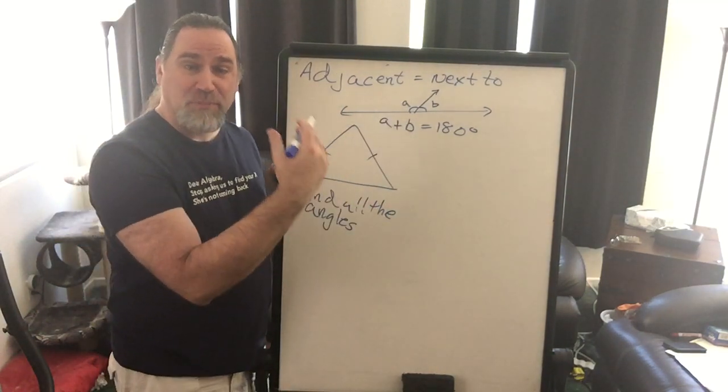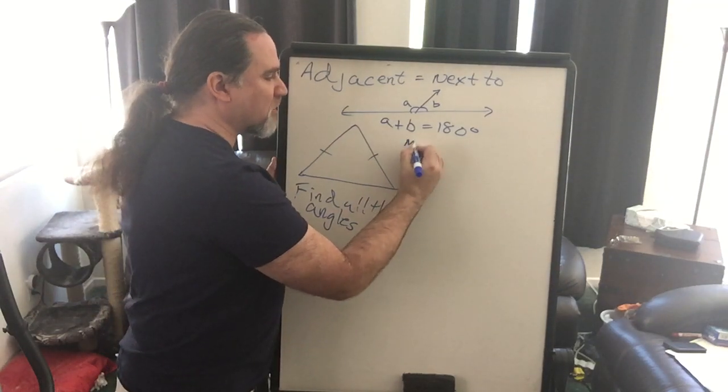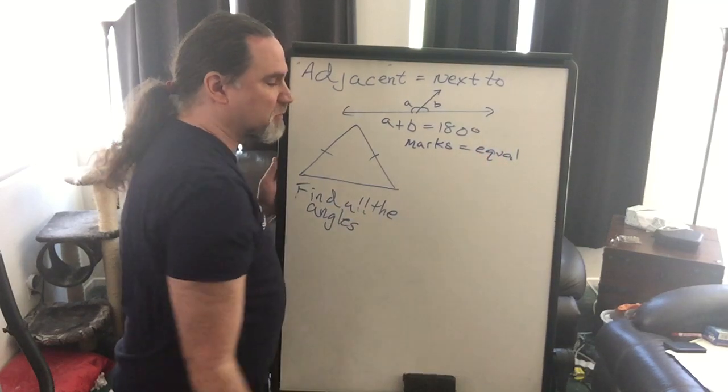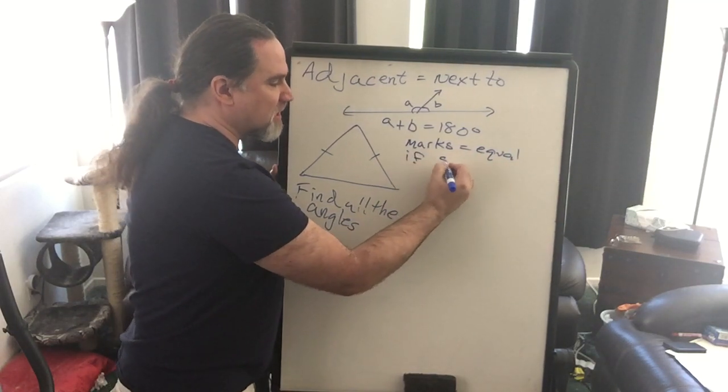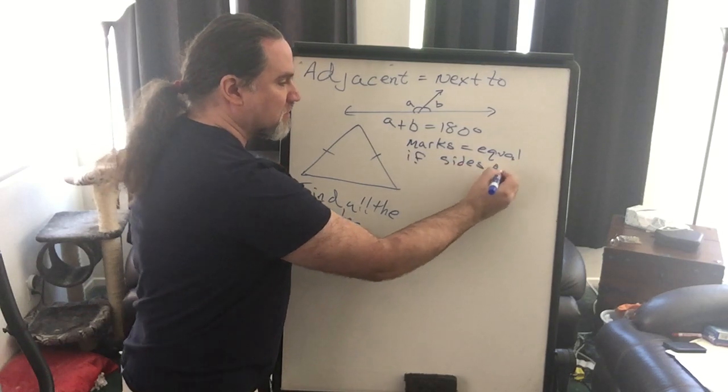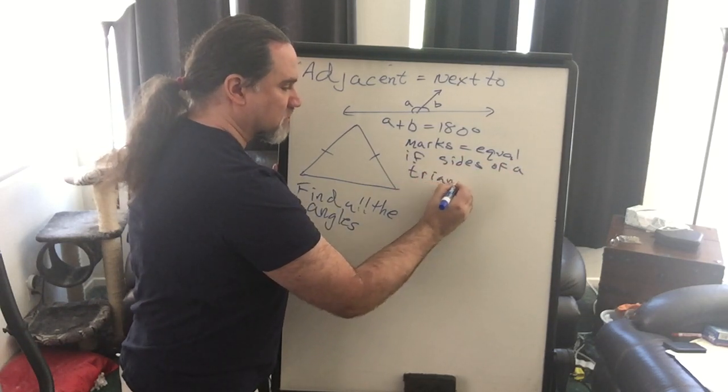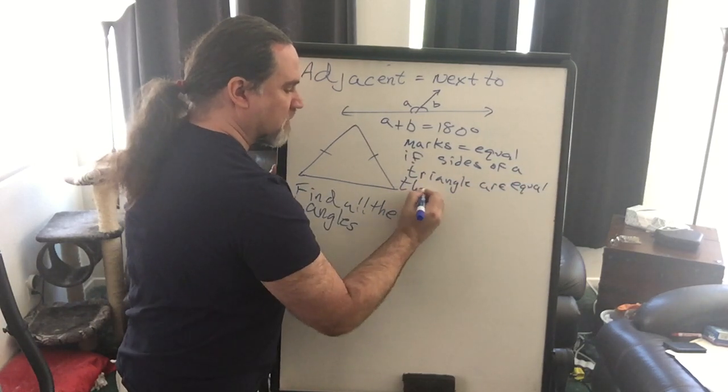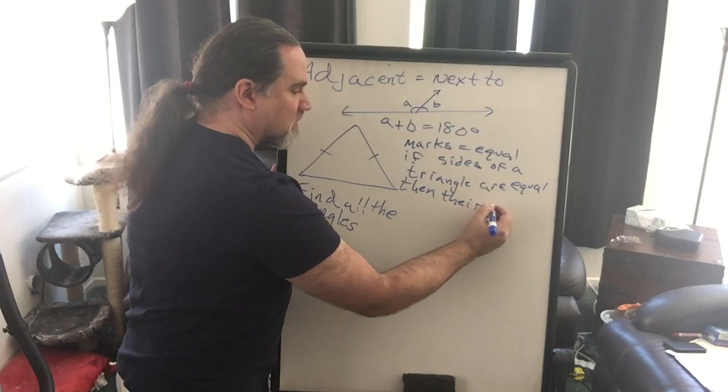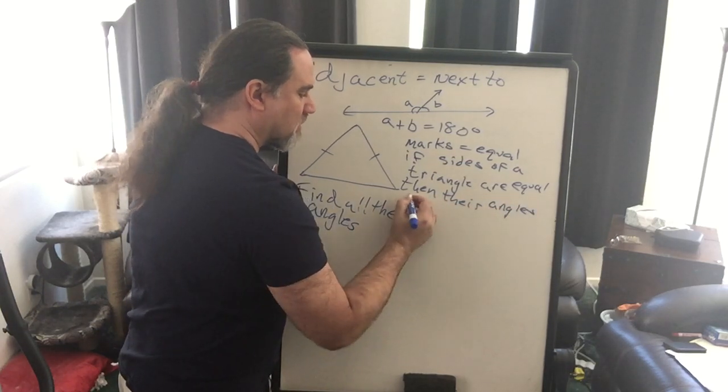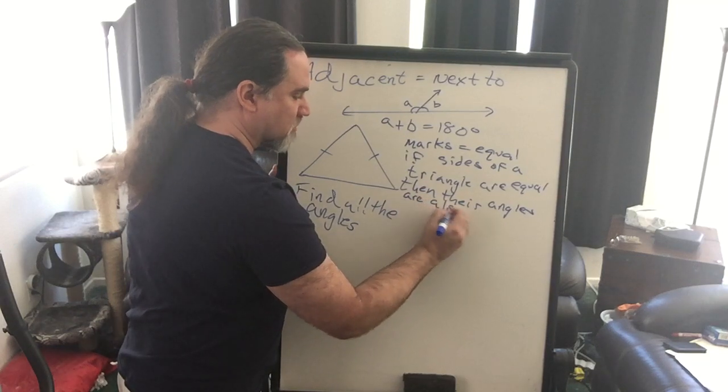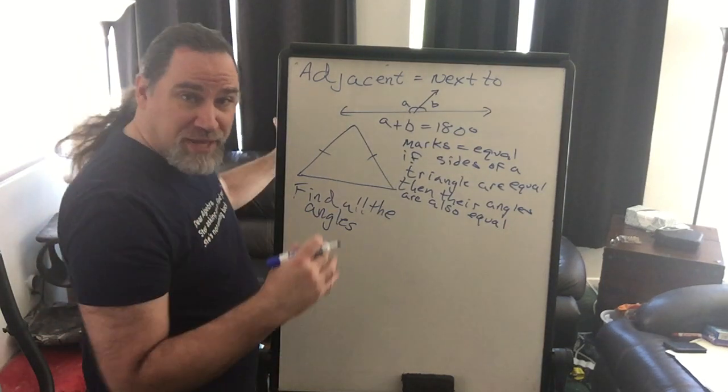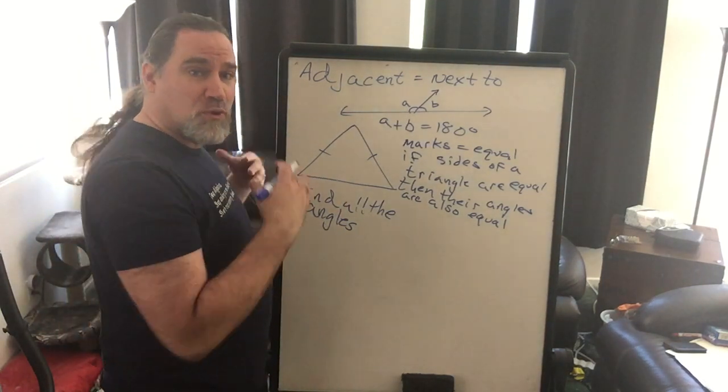So let's write that down. First, the marks mean they're equal. And if sides of a triangle are equal, then their angles are also equal. Now that we have that established, we're going to get a little bit more information here. That is that the angle of this is 8x plus 5.